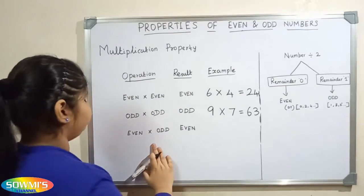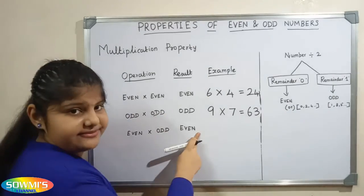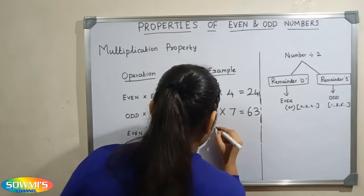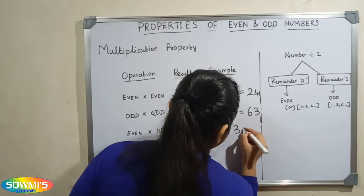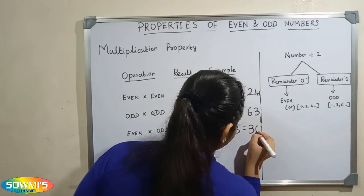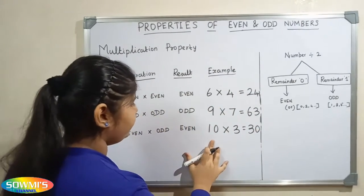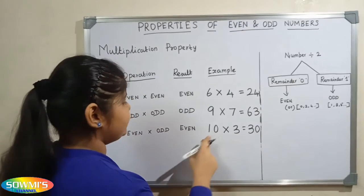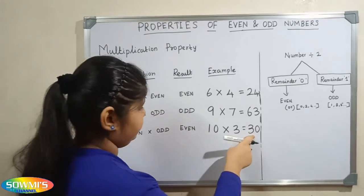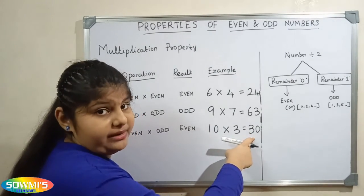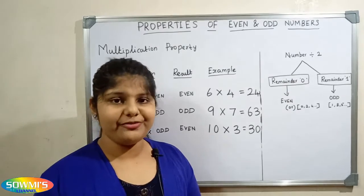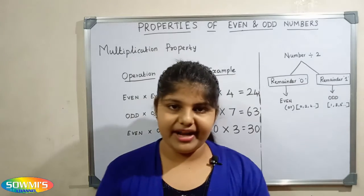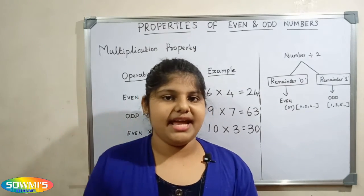When we multiply an even number and an odd number, the result will be an even number. For example, 10 multiplied by 3 is equal to 30. Here 10 is the even number and 3 is an odd number, and the result 30 is an even number. Hope all of you understood the properties of even and odd numbers. Keep watching SOM channel, bye friends, thank you.